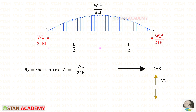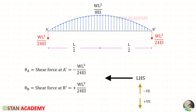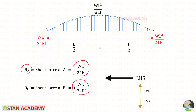Let us find the slope at point A of the real beam — that is the shear force at A' in the conjugate beam. Using the right-hand side rule, it is acting downwards so it will be negative. Similarly, the shear force at B' using the left-hand side rule is acting downwards so it will be positive.